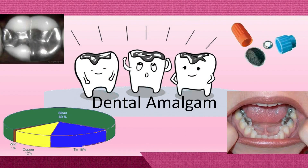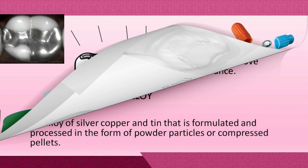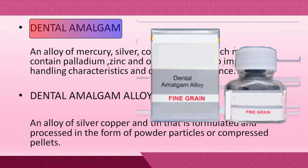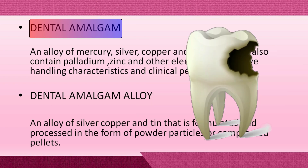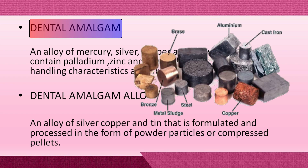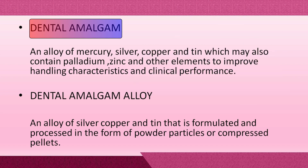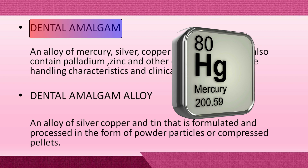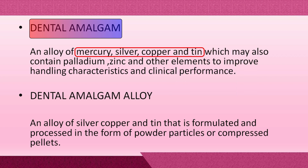Hello friends, welcome to Dental Digest Plus. Today's topic is dental amalgam. As we all know, dental amalgam is the oldest direct restorative material used to restore carious lesions. Technically, amalgam means an alloy of two or more metals, of which one of the constituents is mercury.